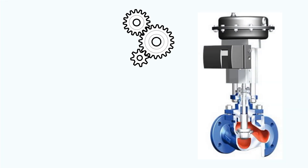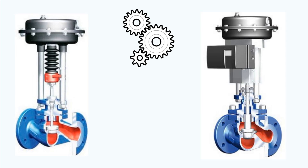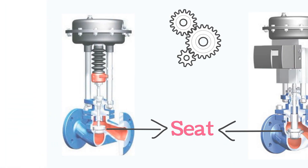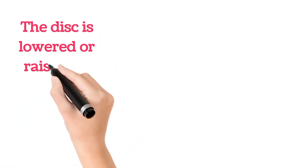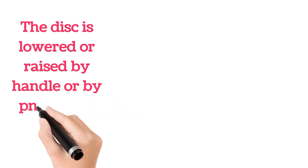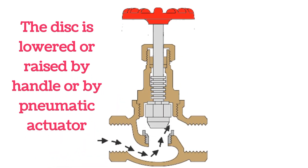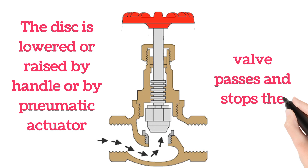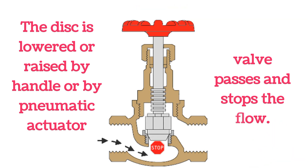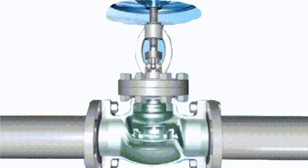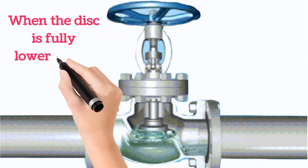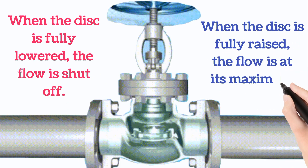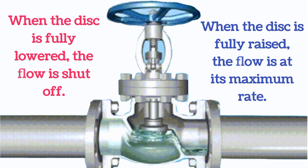Here the globe valve seat is shown in these images with the help of arrows. The disc is lowered or raised by either a handle or pneumatic actuator. The actuator for a globe valve is a pneumatic positioner or electro-pneumatic positioner. The globe valve passes or stops the flow by the movement of the disc. When the disc is fully lowered, the flow is shut off. When the disc is fully raised, the flow passes at its maximum rate.